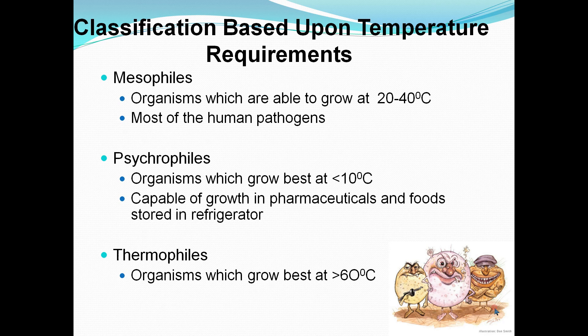Temperature is another important factor for the growth of bacteria. Mesophils are bacteria which grow at temperatures of 20 to 45 degrees Celsius (68 to 113 degrees Fahrenheit) and thrive in moderate temperatures. These are bacteria that are part of the human microbiome, which experience optimal growth at or near body temperature.